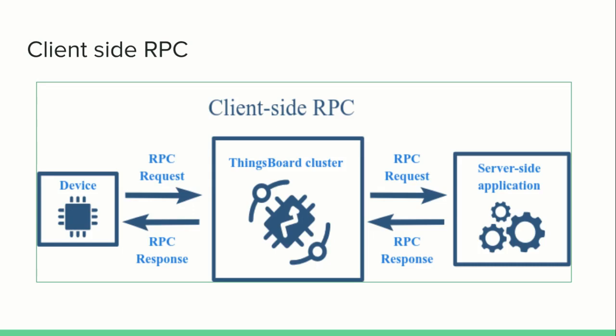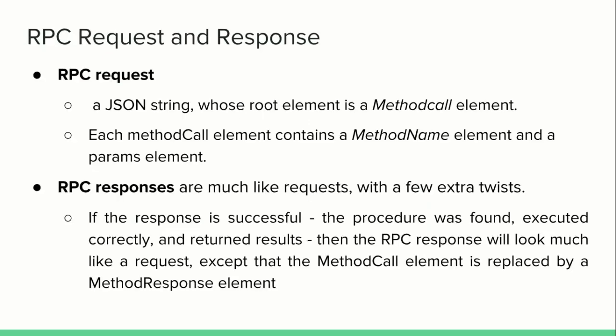This figure represents the flow of how client-side RPC works. Here the client is the originator, so the client will send an RPC request to the ThingsBoard IoT platform. In response to the request, ThingsBoard sends an RPC response. Next we will have a look at the RPC request and RPC response structure.